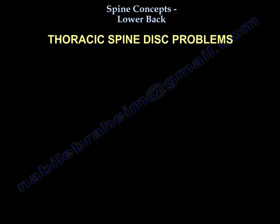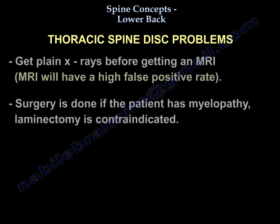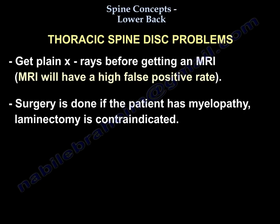Regarding thoracic disc herniation: it usually occurs in males. You have radicular pain that radiates to the ribs and anteriorly at the same level. You will have gait disturbance, normal upper extremity exam, and lower extremity upper motor neuron findings — you will find clonus and Babinski. Start by getting plain x-rays before the MRI. MRI, although a good study, will have a high false positive rate. Surgery is done if the patient has myelopathy, and laminectomy is contraindicated — approach from the same side of the problem.